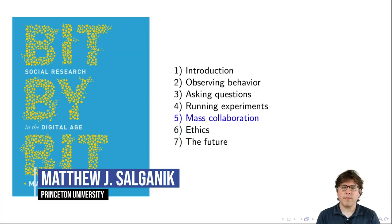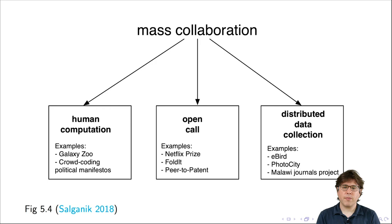This is the second video in a series about mass collaboration. It covers material in Chapter 5 of Bit by Bit. As I said in the first video of this series, I organized mass collaborations into three broad categories. In this video, I'll be talking about human computation projects.